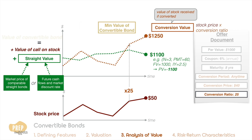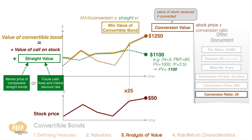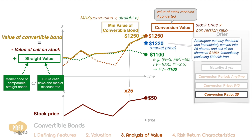At any point in time during the conversion period and before conversion, the minimum value of a convertible bond is the higher of the conversion value and the straight value of the bond. At this point, the minimum value is the conversion value of $1,250. For example, if the market price of the convertible bond is $1,220, an arbitrageur can buy the bond, immediately convert into 25 shares, and sell all the shares at $1,250, immediately pocketing $30 risk-free. The price of the bond has to be minimally $1,250 to eliminate arbitrage opportunity.